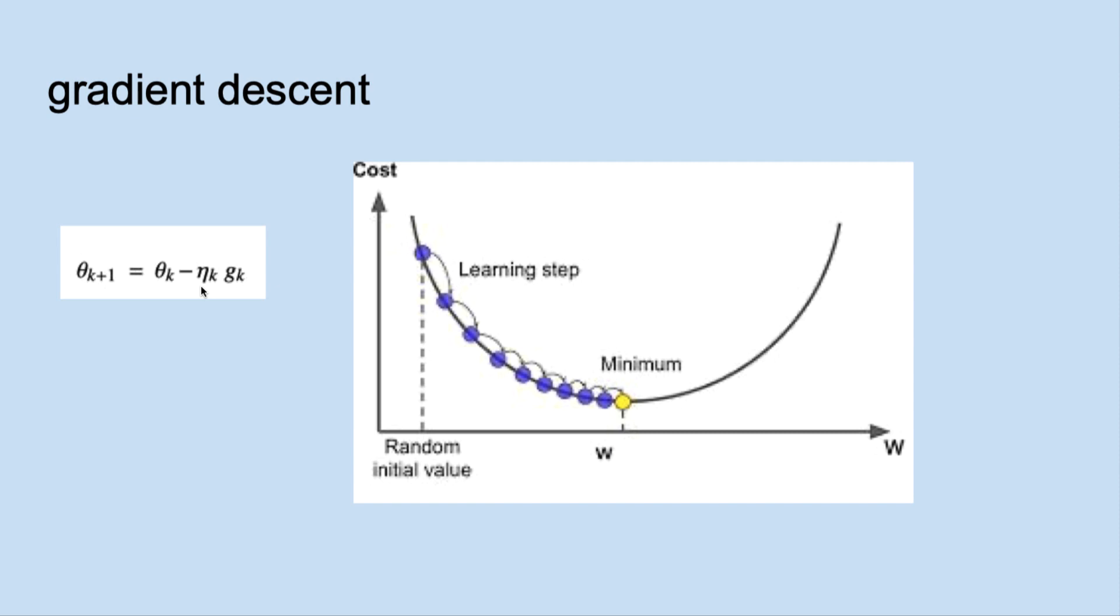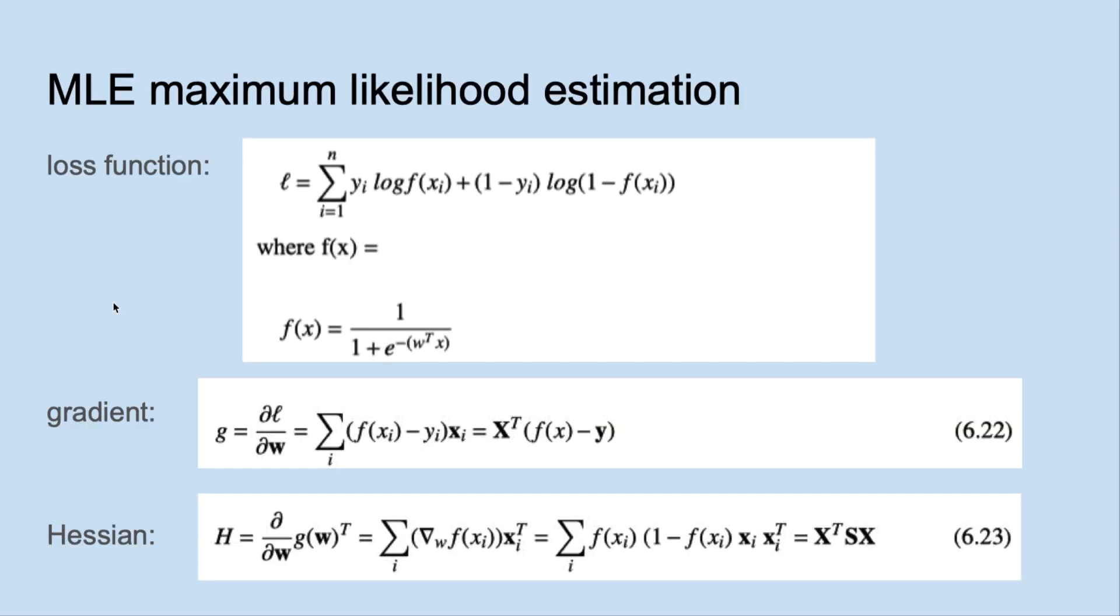When we get to deep learning, you'll hear the term stochastic gradient descent, which is when data is randomly selected in batches instead of all at once. For logistic regression, R uses a different optimization method called Newton-Raphson.